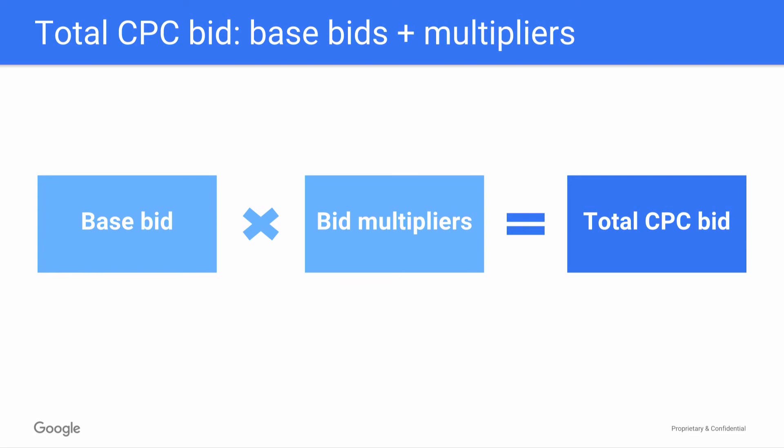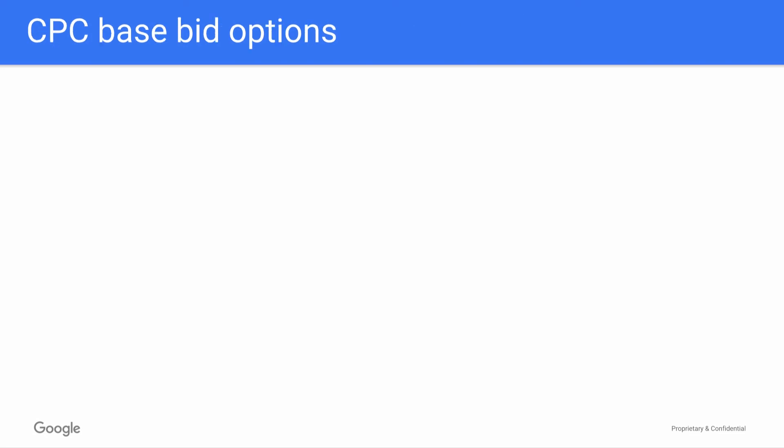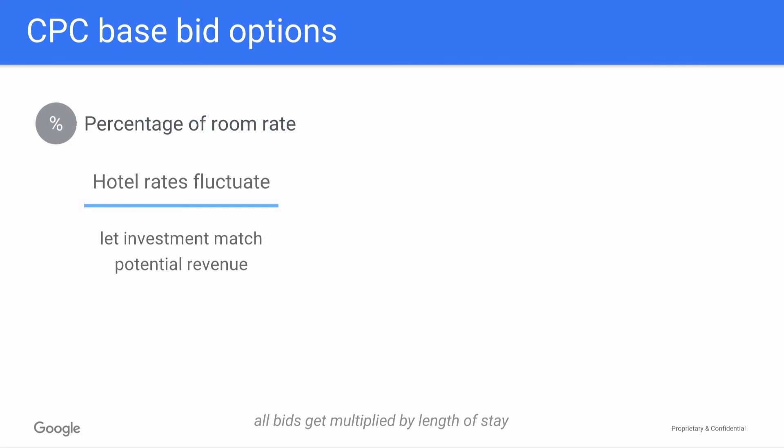When you're setting a CPC base bid, you have two options. First, you can bid a percentage of the room rate. Since hotel rates fluctuate based on factors like weekday versus weekend and the type of room, using percentage of room rate aligns your investment with the potential revenue from that booking. For example, if you bid 1% on a property with a $150 per night rate, and that property is eligible to show to a searcher looking for two nights, since all bids get multiplied by the number of nights in the query, you would end up with a total bid of $3.